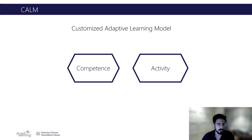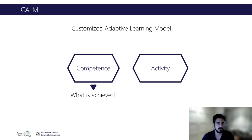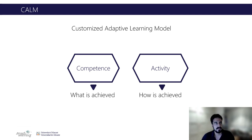CAL is a customized adaptive learning model based on two main concepts: the competence, that is the skills or the knowledge the students acquire, and the activities — the different tasks they will perform to acquire these competencies.